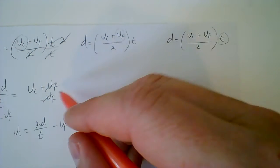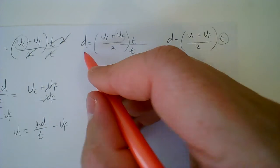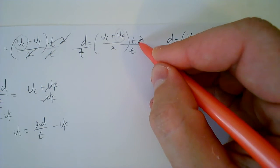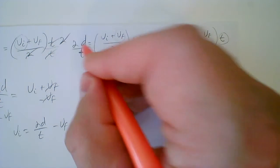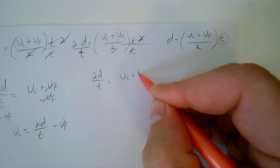To solve for vf, pretty much the same steps to get started. Divide by t, multiply by 2, then we have 2d over t equals vi plus vf.